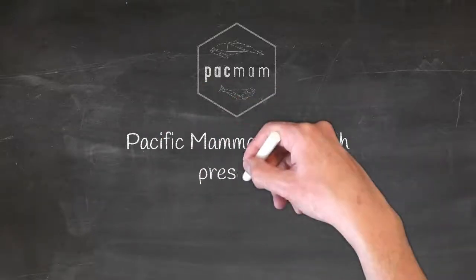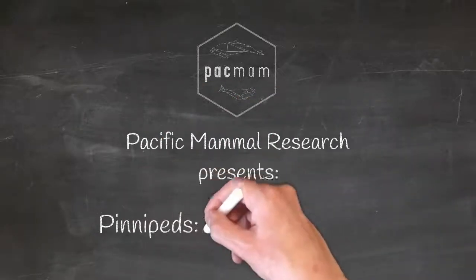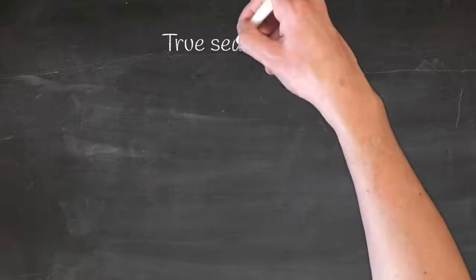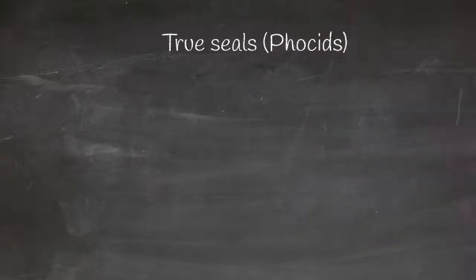Have you ever wondered what the difference is between a seal and a sea lion? I'm glad you asked. Seals and sea lions, along with walruses, are called pinnipeds, which means fin or feather-footed because they have flippers instead of feet.